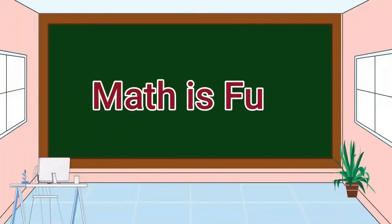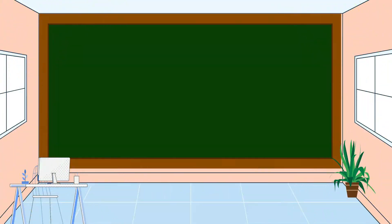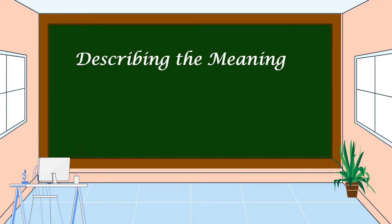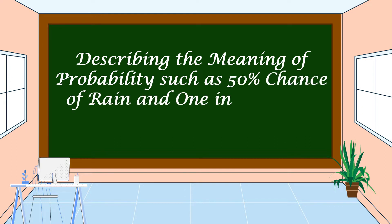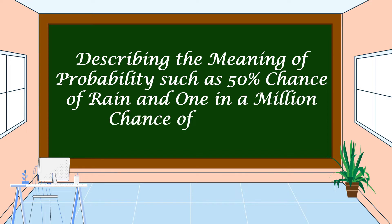Hello everyone, welcome to Math is Fun. Our lesson for today is all about describing the meaning of probability, such as 50% chance of rain and one in a million chance of winning.